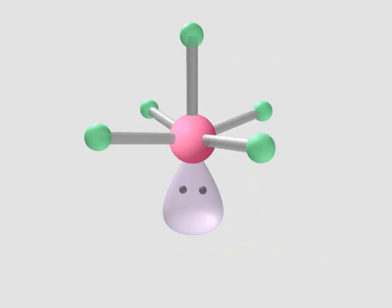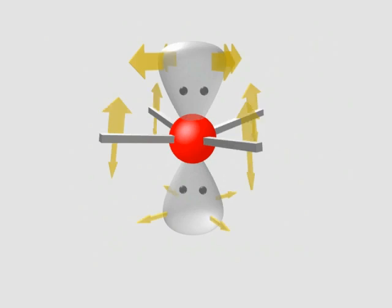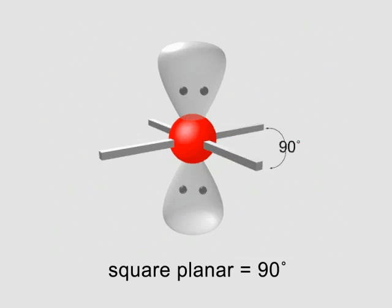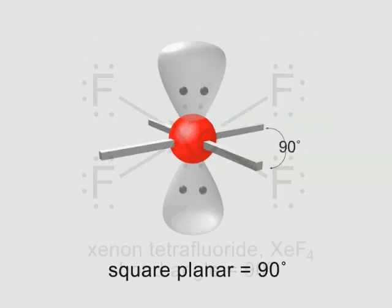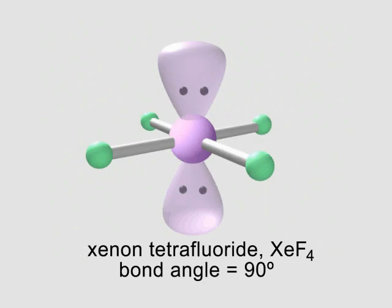To minimize repulsions, a second lone pair must lie 180 degrees from the first. The four remaining bonding groups are repelled to the ideal 90 degree angle and define the square planar shape. Xenon tetrafluoride, one of the first noble gas compounds to be made, is a square planar molecule.